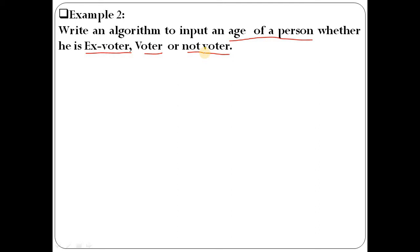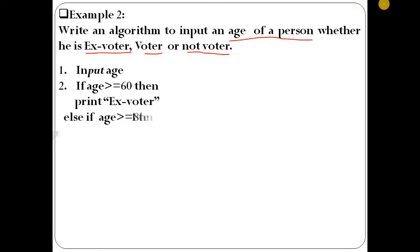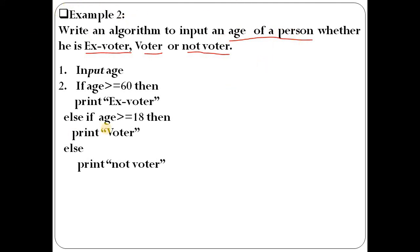First, input the age from the user. For example, if the age entered is 40 — the first condition checks: if age is greater than or equal to 60, then the person is an ex-voter. Since the input is 40, this condition is false — 40 is not greater than or equal to 60 — so that statement will not be executed.